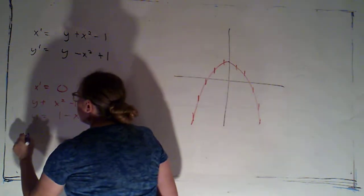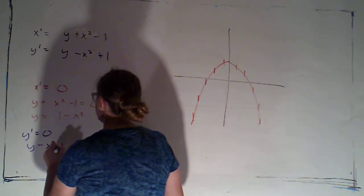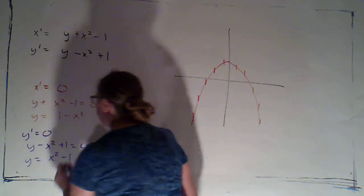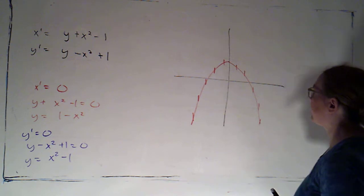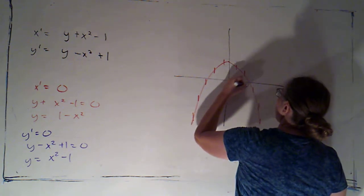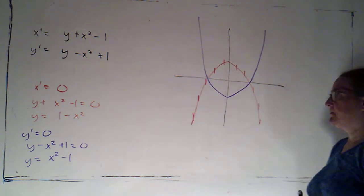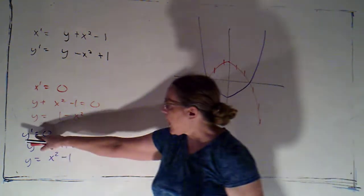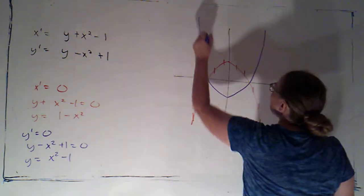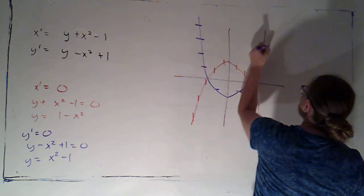For the y-nullcline, y' = 0 means y - x² + 1 = 0, so y = x² - 1. That's an upward-opening parabola translated downward. Since y' = 0 there, we're not moving up or down — only left or right — so we have horizontal tangents along that nullcline.